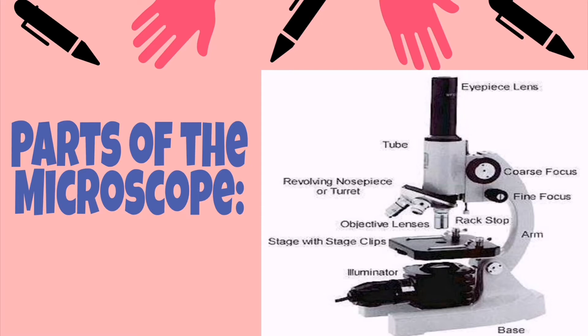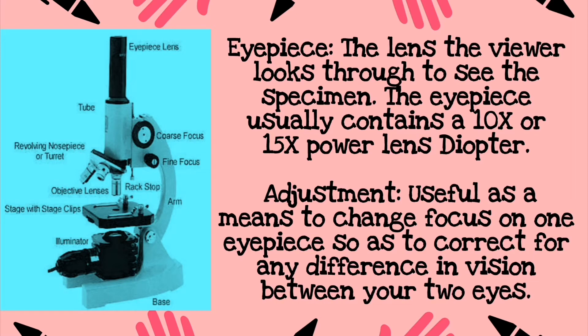Number one is the eyepiece — the lens the viewer looks through to see the specimen. The eyepiece usually contains a 10x or 15x power lens. The diopter adjustment is useful as a means to change focus on one eyepiece so as to correct for any difference in vision between your two eyes.